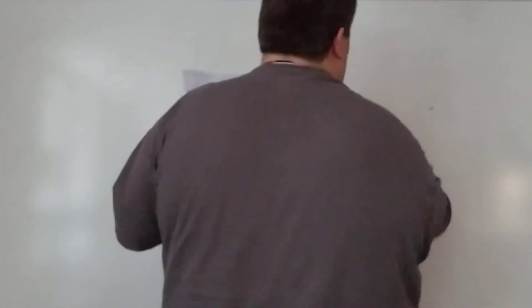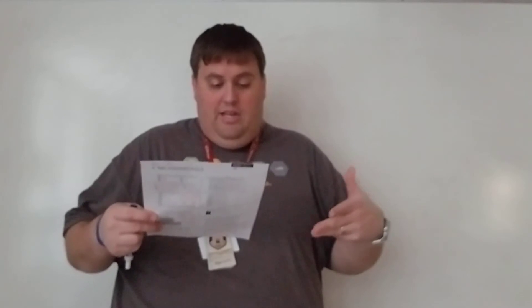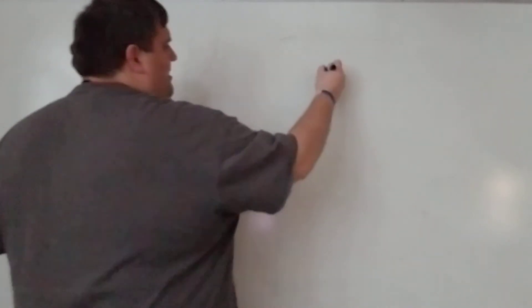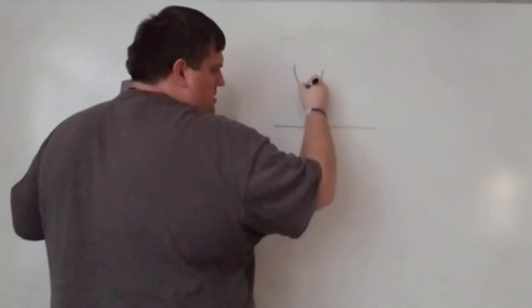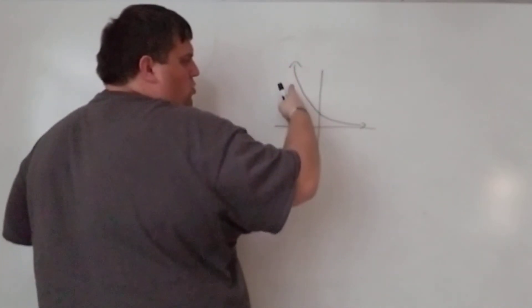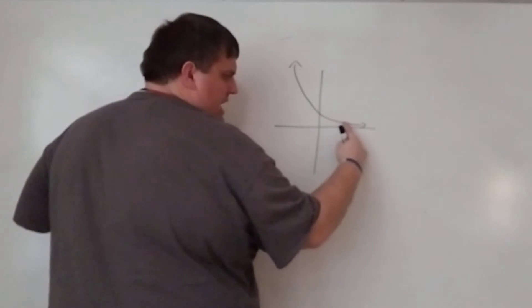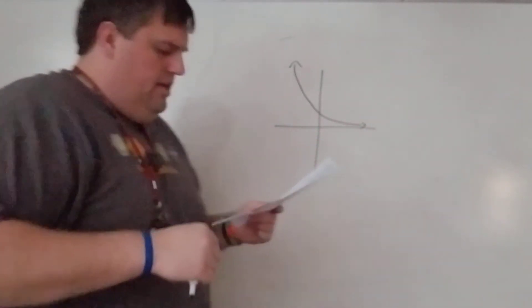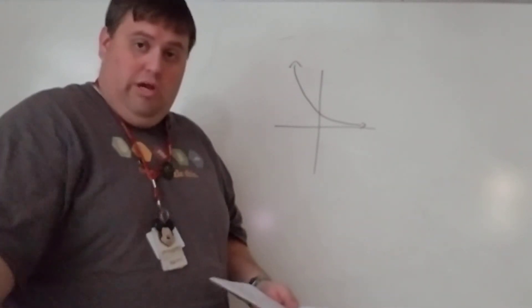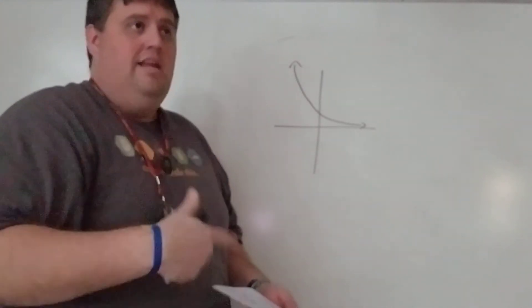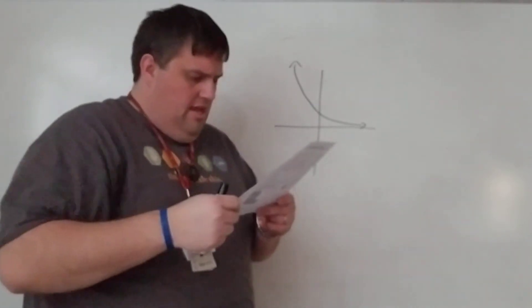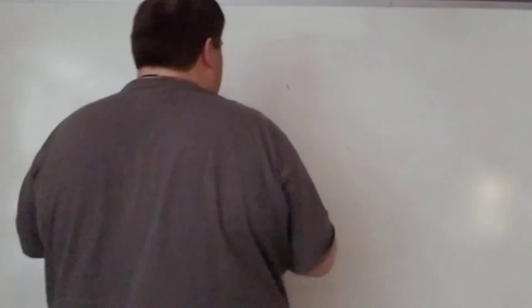Number thirteen: the equation is 1,200 times (1 minus 0.1) to the x. Thinking about exponential decay, at first it decreases quickly and then much more slowly toward the end. So the fall at the beginning is large, and then it becomes much less — they just wanted you to know it decreases more quickly at the start.